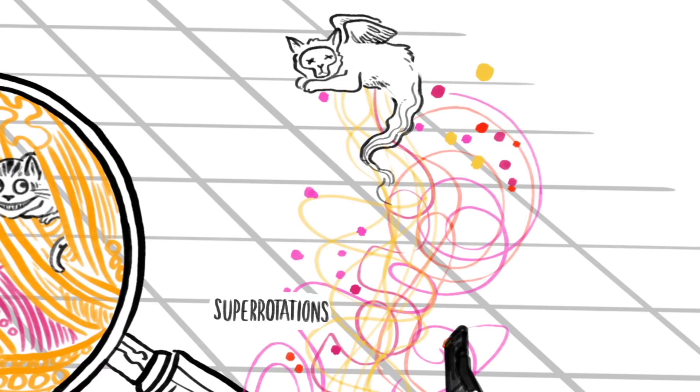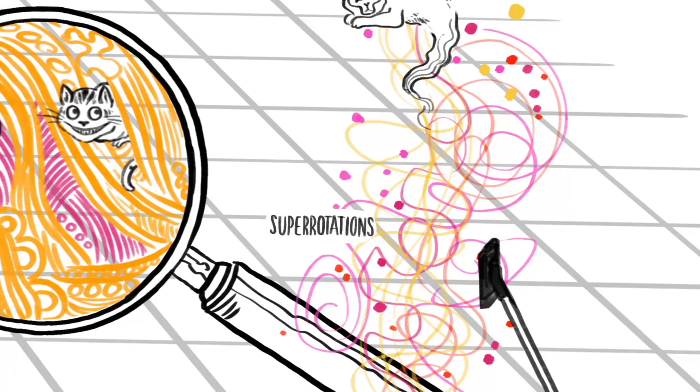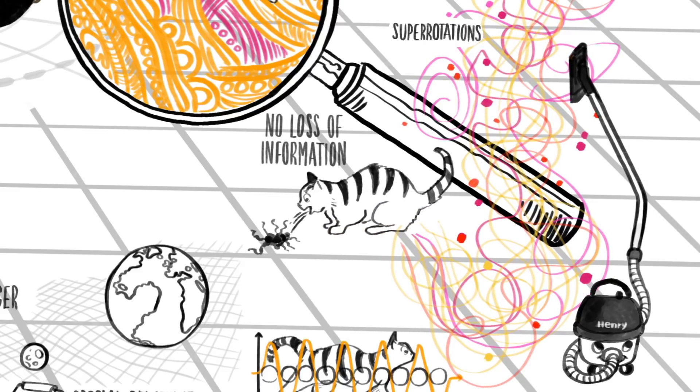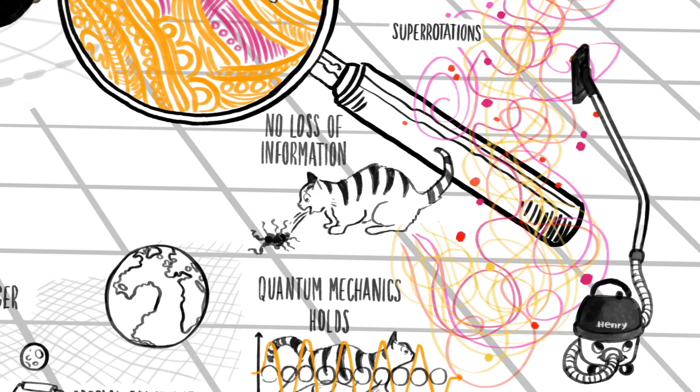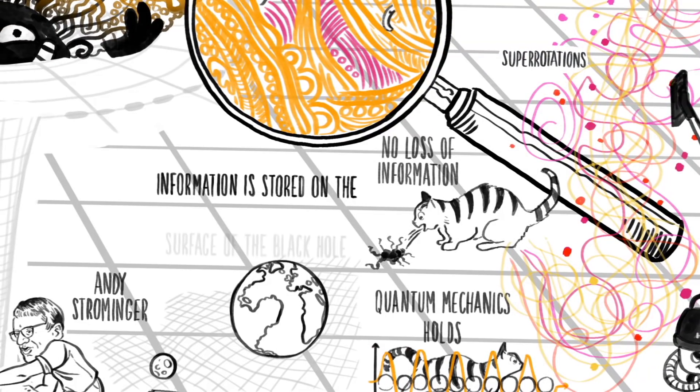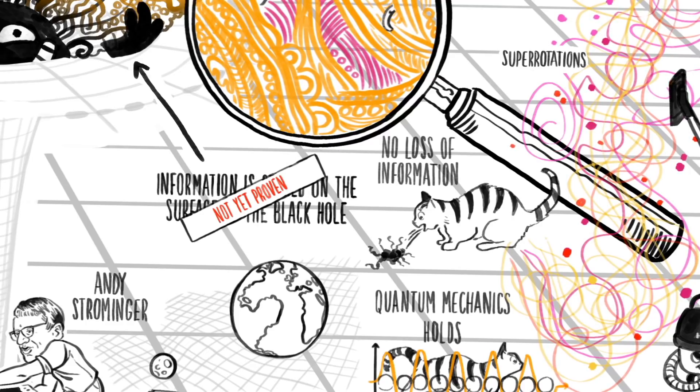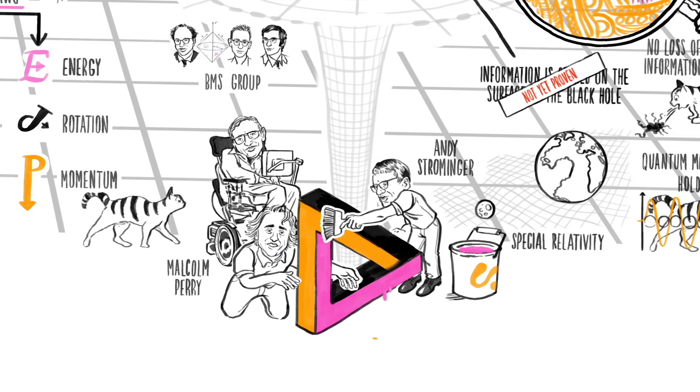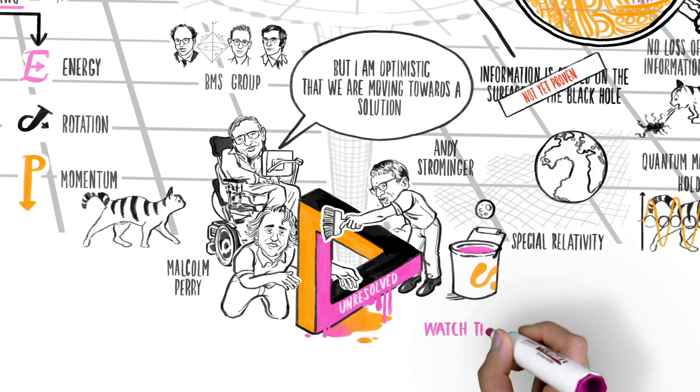If this is right, and all the information about a black hole can be understood in terms of its hairs, then perhaps there is no loss of information. Quantum mechanics continues to hold and information is stored on the surface of the black hole. We have not yet proven that this is true. The information paradox remains unresolved. But I am optimistic that we are moving towards a solution. Watch this space.